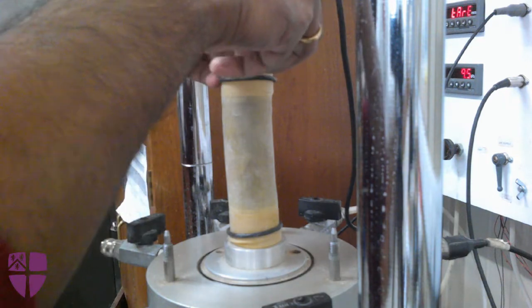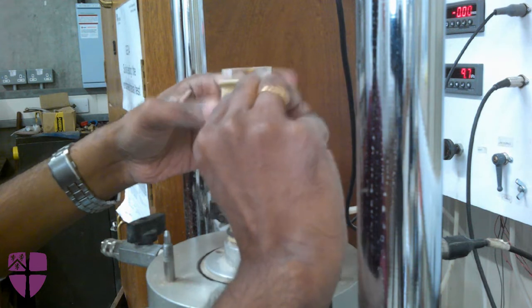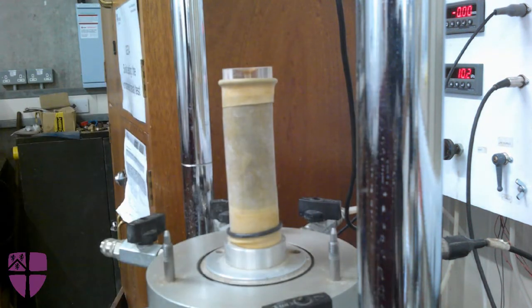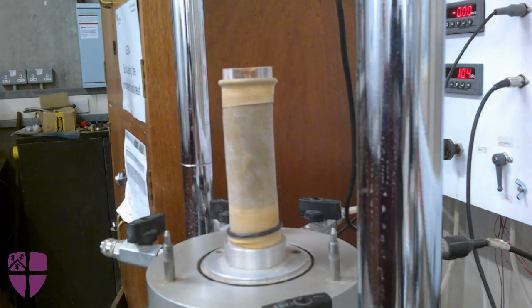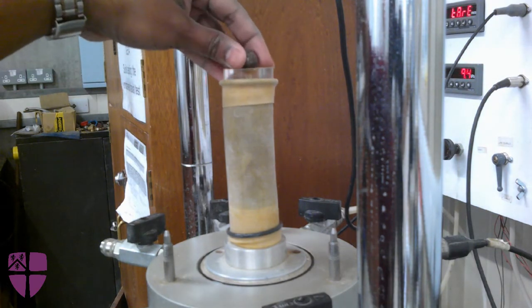Roll down the membrane to expose the top cap sitting on the sample. Ensure the sample assembly is aligned straight with the pedestal. Place the steel ball on the cap to ensure the stress is applied uniaxially on the sample from the loading frame.